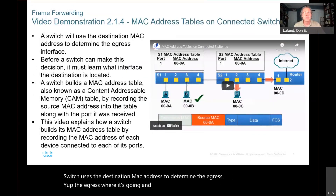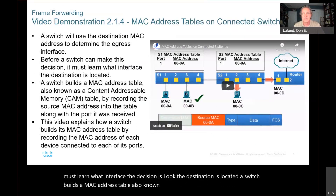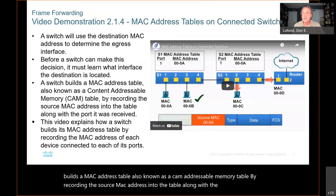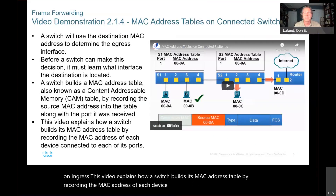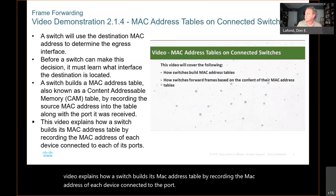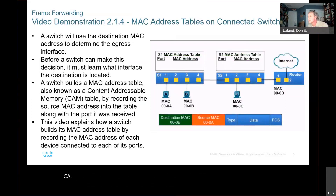Before a switch can make a forwarding decision, it must learn what interface the destination is located on. A switch builds a MAC address table — also known as a CAM, Content Addressable Memory, table — by recording the source MAC address into the table along with the port it was received on, the ingress port. This video explains how a switch builds its MAC address table. In this example, PCA is going to send an Ethernet frame to PCB, and we'll examine how switches S1 and S2 build their MAC address tables and forward frames.